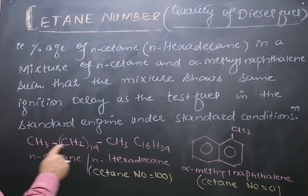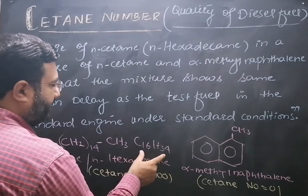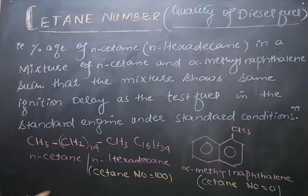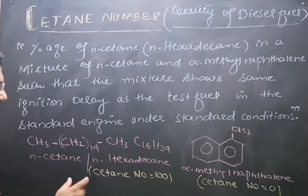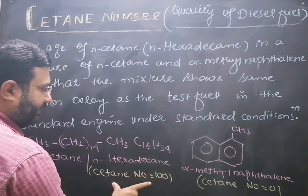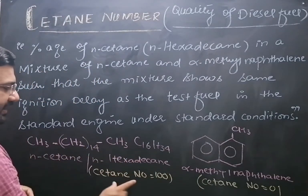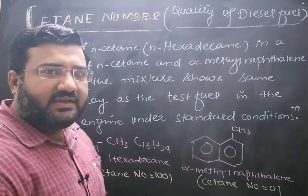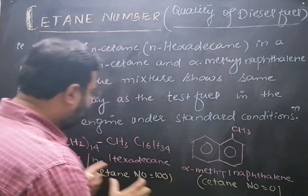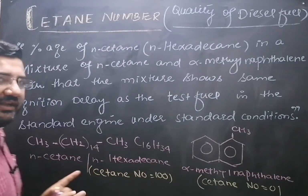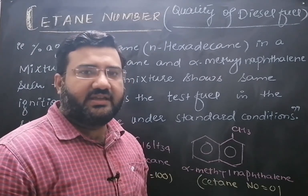What is normal cetane? Normal cetane has 16 carbon atoms; its molecular formula is C16H34, common name is N-cetane, and IUPAC name is N-hexadecane. It is arbitrarily given a cetane number equal to 100. This straight-chain hydrocarbon will show ignition in the engine in the minimum time. Straight-chain hydrocarbons having high cetane number show easy ignition or require lesser time for ignition in the engine.